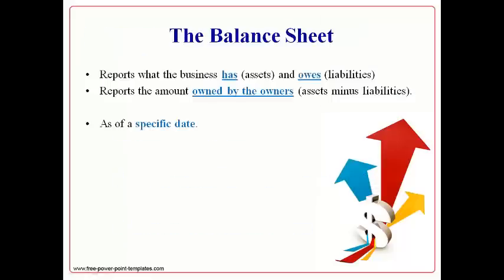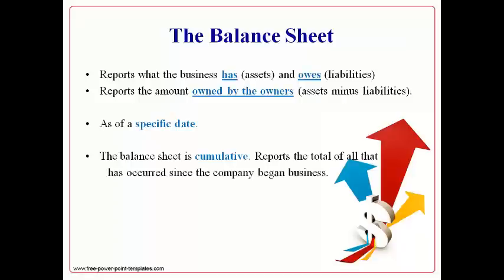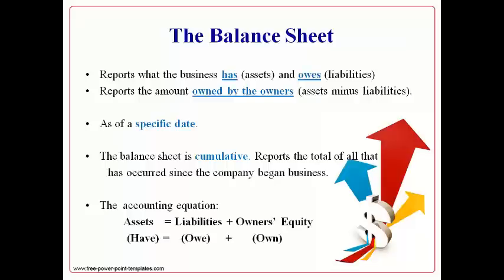The balance sheet reports the items the business has, which are called assets, the amounts the business owes, which are called liabilities, and the amount that is owned by the owners, which is called owner's equity. The information is reported as of a specific date. The amounts on the balance sheet are cumulative, which means it is the net of all increases and decreases since the first day the company began business. Assets will always equal liabilities plus owner's equity. This equation, referred to as the accounting equation, will always hold true. Whatever a business has will always either be owed for or owned.